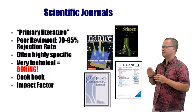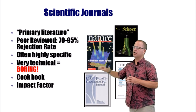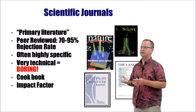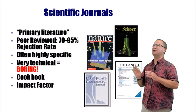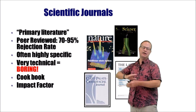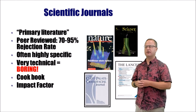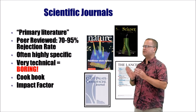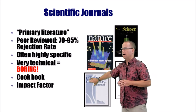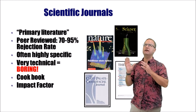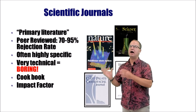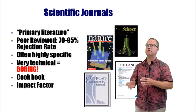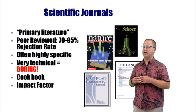Journals tend to be very technical, using a lot of jargon, making them hard for someone not trained in that field to understand — and often very boring. But an important feature of scientific journals is that they function like a cookbook: a tenet of science is that materials and methods must be included, so that other scientists who are skeptical can redo the experiment and see if they get the same results.